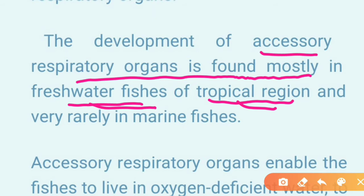Freshwater fishes are those in water where the salt content is very low. These fish are called freshwater fishes. If they are in tropical regions, they are more likely to develop accessory respiratory organs. However, accessory respiratory organs are very rarely found in marine fishes.